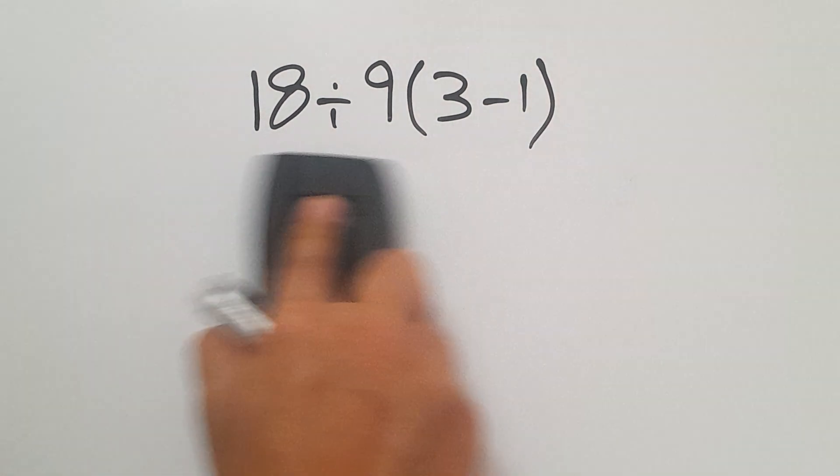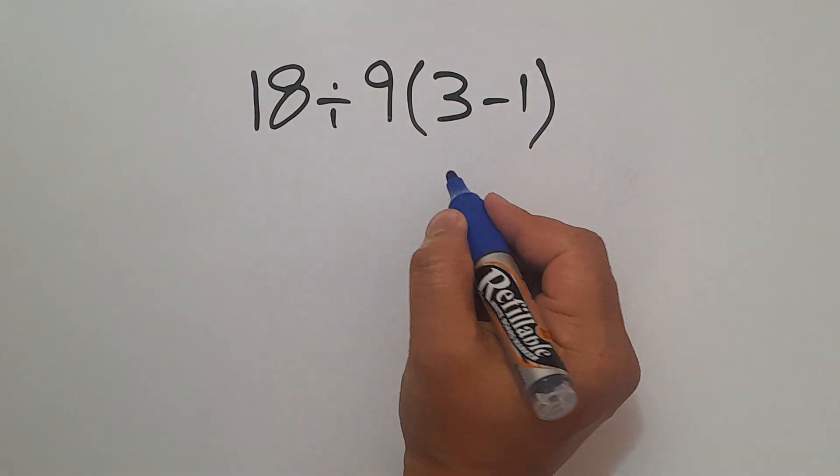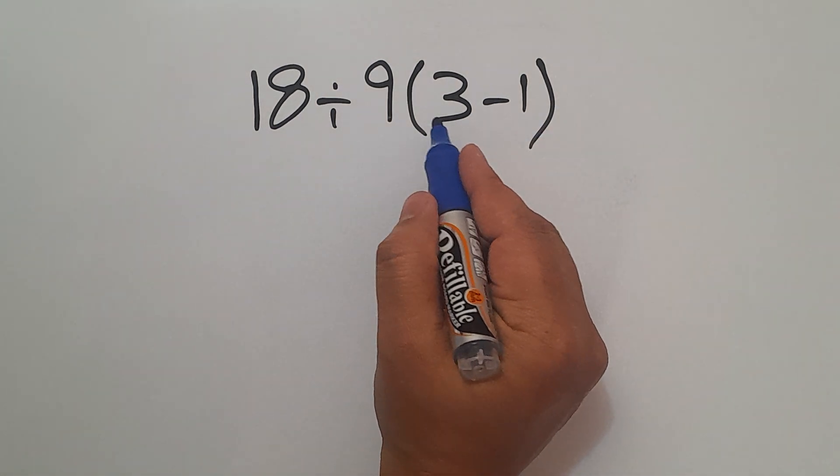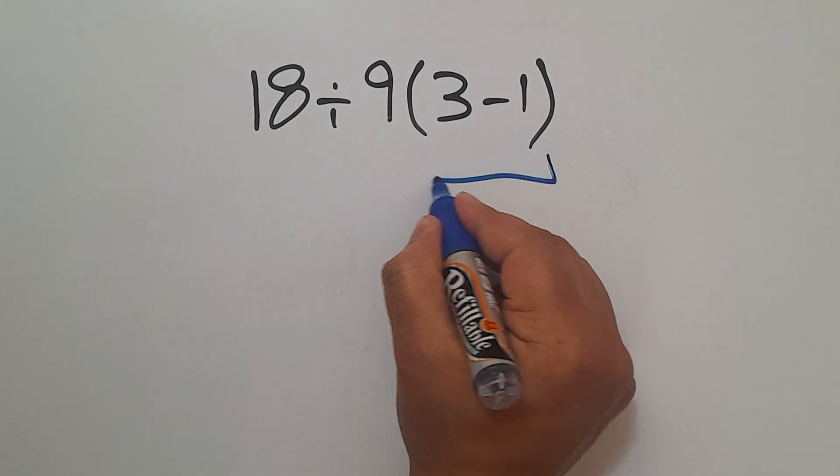No, the correct path according to PEMDAS: first we have to calculate these parentheses, so 3 minus 1 equals 2.